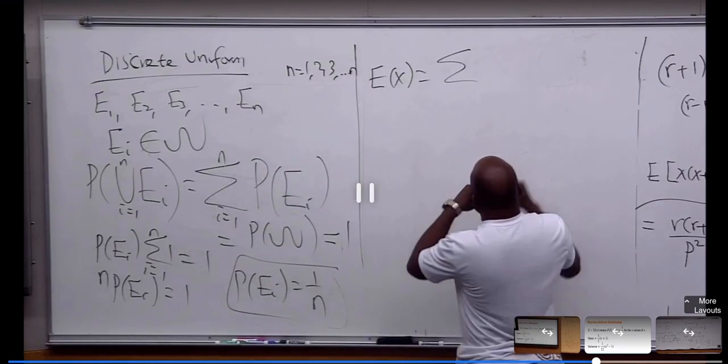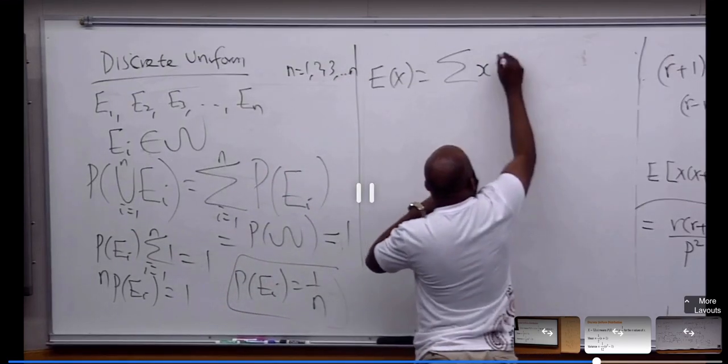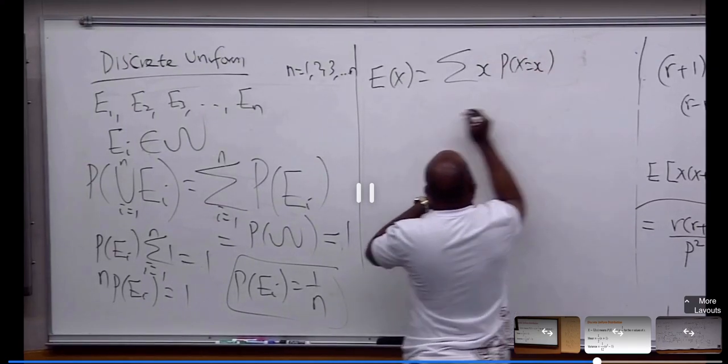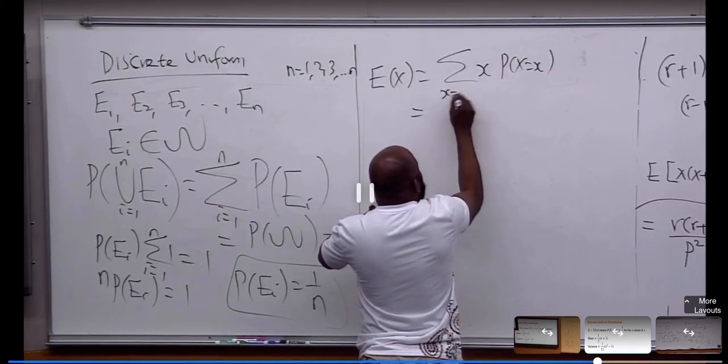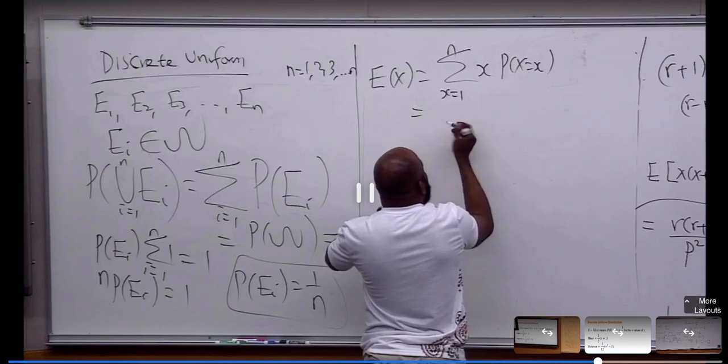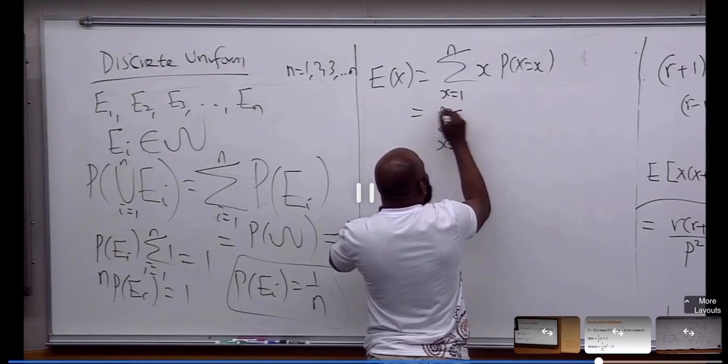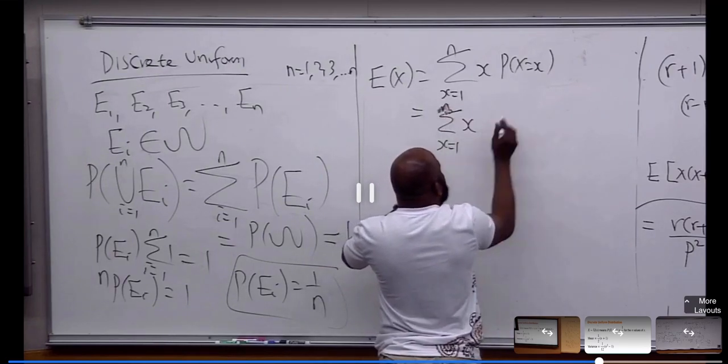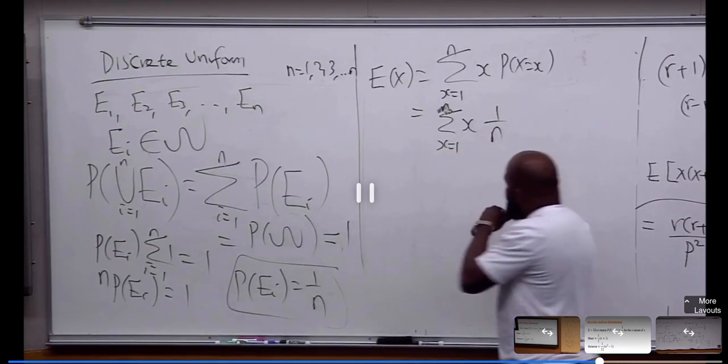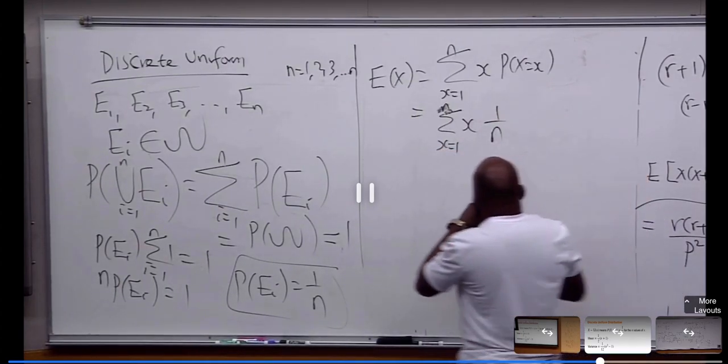Now, X times P(S), S starts from 1 to N. X times 1 over n. This is going to be 1 over n, summation X, X starts from 1 to N.